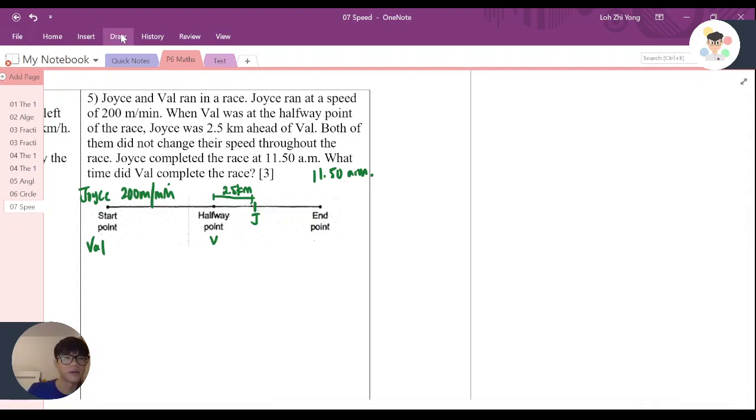Now a very interesting point here you need to understand is that when Val is here, Joyce is actually 2.5 km ahead. Now let me just try to do this. If Val now is at the endpoint, assume that Joyce actually continued to run,